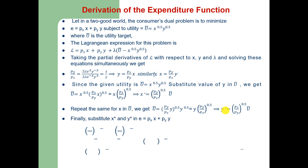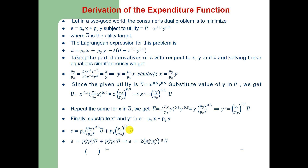Finally, substituting X-star and Y-star into the expenditure function E = Px·X + Py·Y gives: E = Px·(Py/Px)^0.5·U-bar + Py·(Px/Py)^0.5·U-bar. Simplifying, the expenditure function equals 2·(Px·Py)^0.5·U-bar. Therefore, E(Px, Py, U-bar) = 2·(Px·Py)^0.5 · U-bar, which gives the minimum expenditure required to achieve the given target utility U-bar.